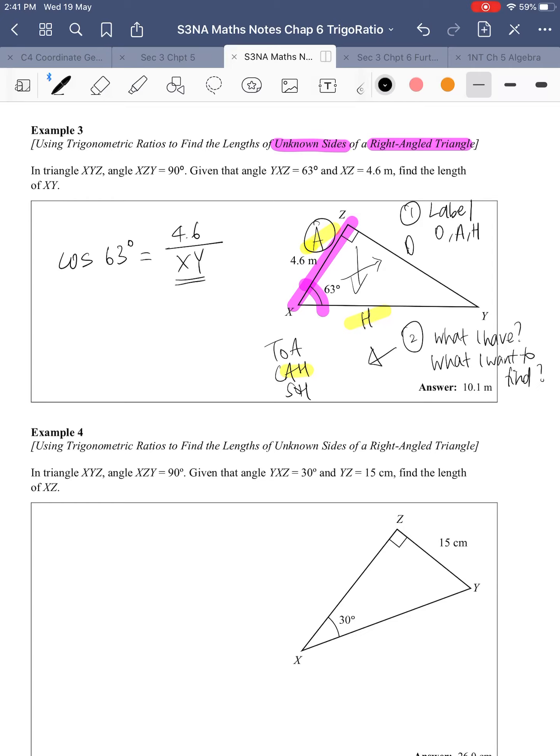When the unknown is at the bottom, what you do is swap positions. XY equals 4.6 over cosine 63. Press in the calculator: 4.6 divided by cosine 63. Make sure your calculator is in degree mode. Your answer would be 10.1324, three significant figures, 10.1 meters. Just a reminder, the answer is given for you to check. Can I give you some time? Go ahead and work on Example 4. Pause the video.